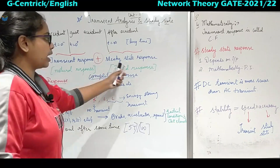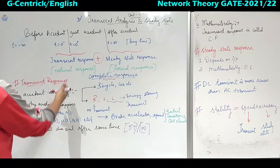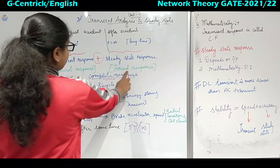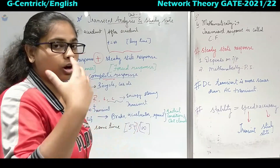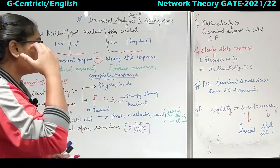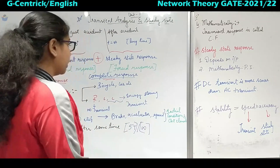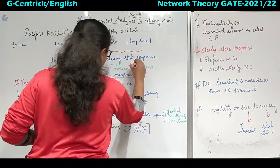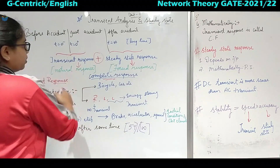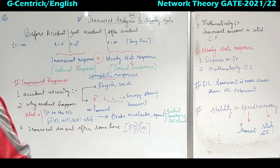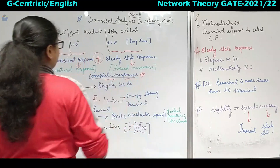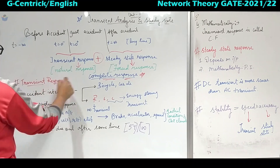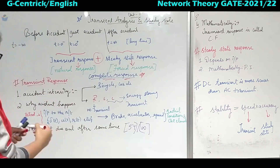Transient response and steady state response together we will call the complete response — addition of both the natural response and forced response. Natural response is because you have fallen; it was not in your control. The steady state or forced response was in your control — that is calling an ambulance, since the ambulance won't come till we call. So that is the forced response, another name for steady state response. And one more name for transient response is natural response. Together they make the complete response.